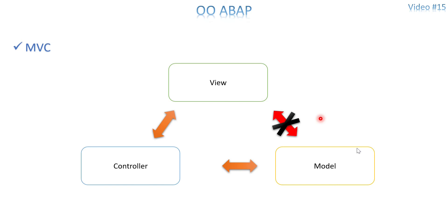The direct communication between View and Model is not possible — that's MVC. I don't need to give a very detailed explanation because it's just a methodology. Based on your business requirement you have to decide which is the View, which is the Controller, and which is the Model that interacts with your database. MVC is not only considered a design pattern — it's normally considered an architectural pattern. It's a universal methodology available in object-oriented design as well.